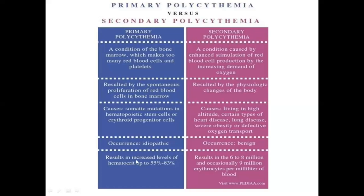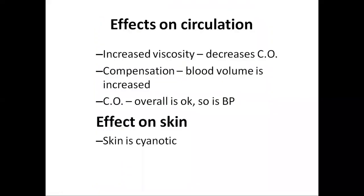Primary polycythemia results in increased hematocrit levels up to 55 to 83 percent. Secondary polycythemia results in RBC counts of 6 to 8 million, and occasionally 9 million erythrocytes per milliliter of blood.